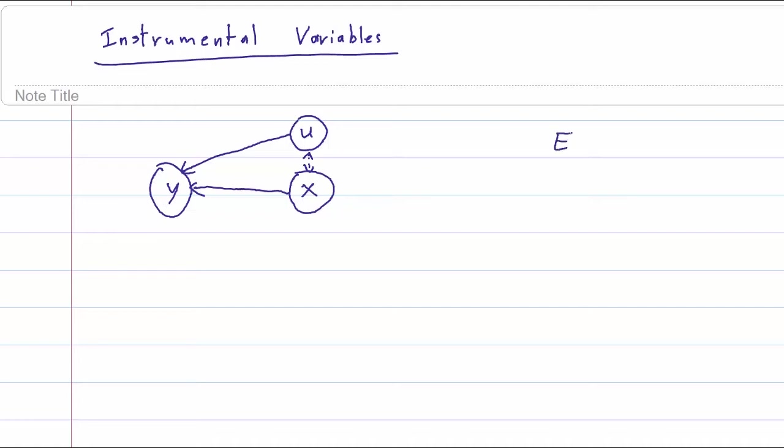Mathematically, the problem is when the expectation of u given x is not zero. So what we want to do is find another variable z that we will call an instrument, that is correlated with x but not with u.